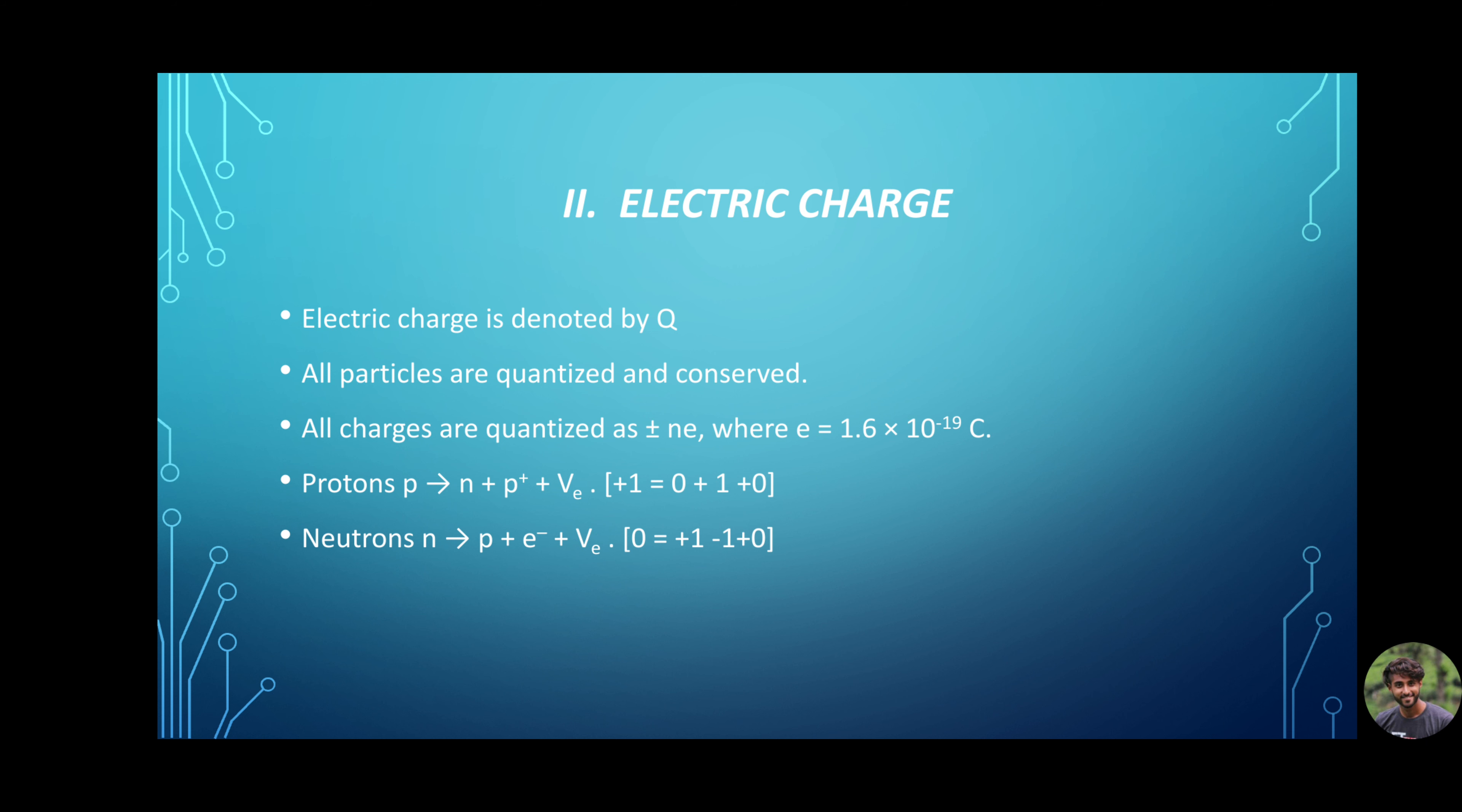Second, electric charge. All the particles which we saw in the previous video were either positively charged, negatively charged or neutral. But, irrespective of the charge, they were all quantized and conserved. This is a very important property. All charges are quantized that of mass of single electron, i.e. ±1.6×10⁻¹⁹ coulomb, also known as e. Thus, charges will be either ±ne or zero for neutral charge. All interactions inside the atom are conserved.